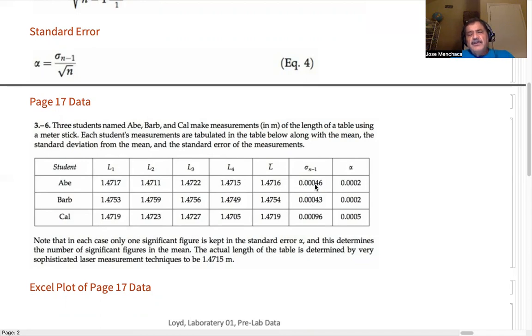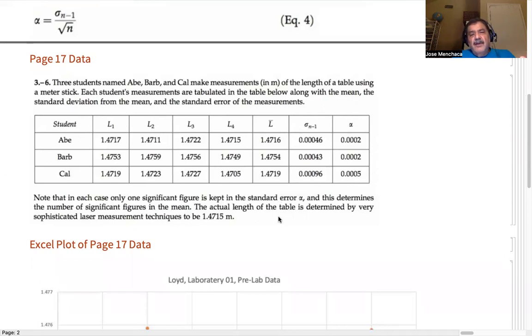We'll see who gets it best. Okay, so the alpha, the standard error, we see that both Abe and Barb, they have 0.002, 0.0002. And then Cal has 0.0005. Well, we saw that his standard deviation was larger than either Abe's or Barb's. So, we might be able to tell something from that. And then we also learned that the actual length of the table is determined by sophisticated laser measurement techniques is 1.4715. Oh, well, it looks like Abe came very close to that.